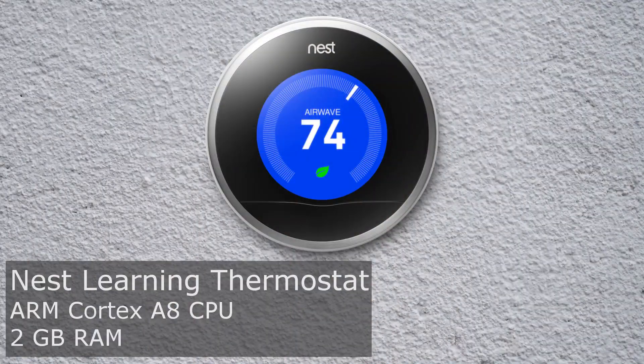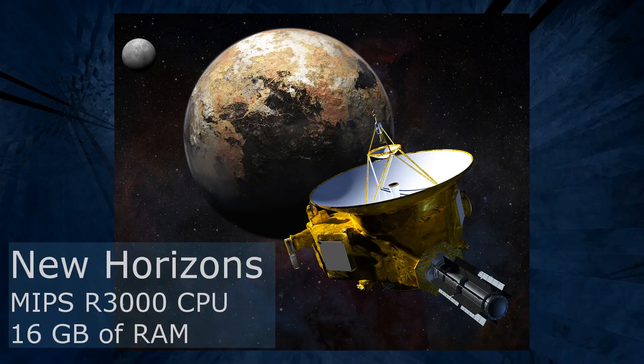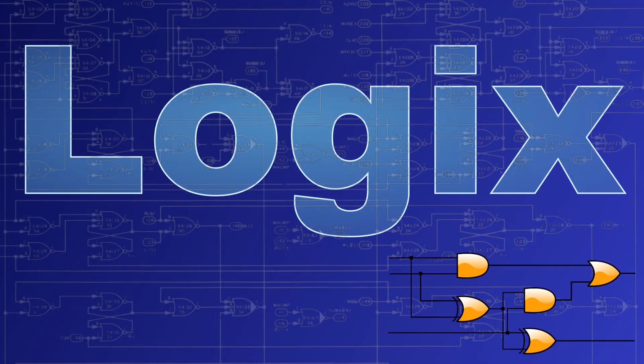Computers are all around us, from sitting on your desk to hanging out in your pocket. They can be something as mundane as a thermostat or something all the way at the edge of our solar system. Computers have revolutionized the way that human beings communicate with each other and to the world around us.